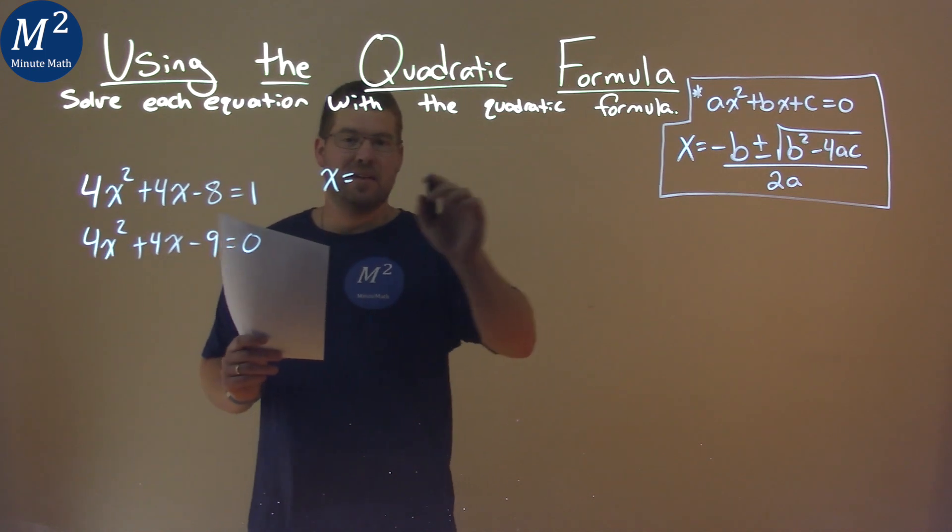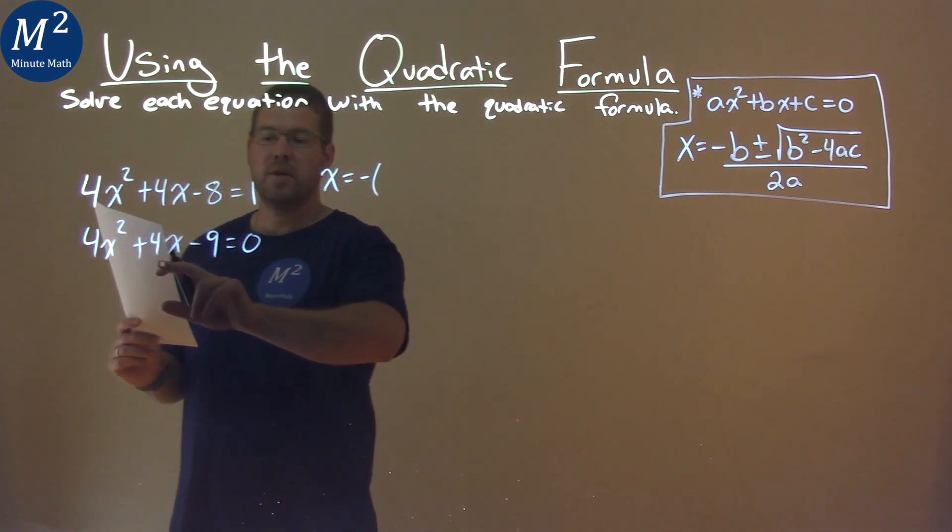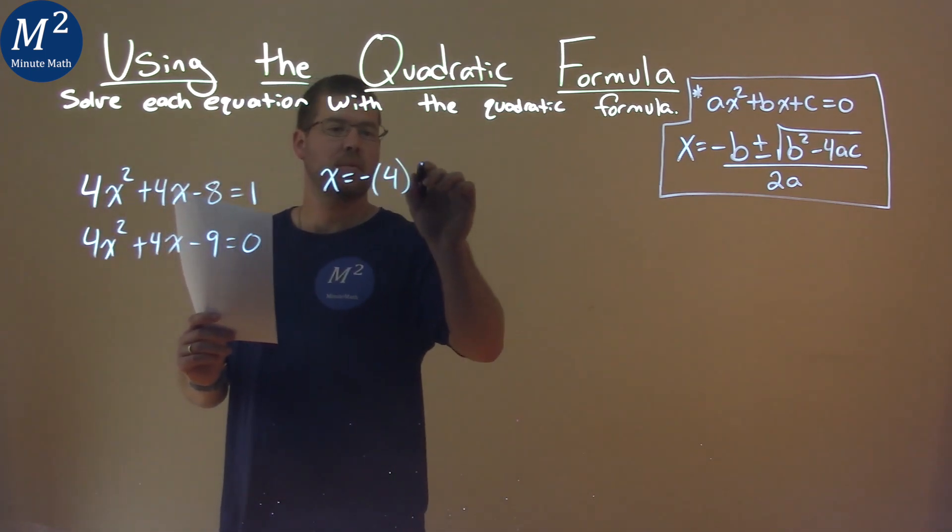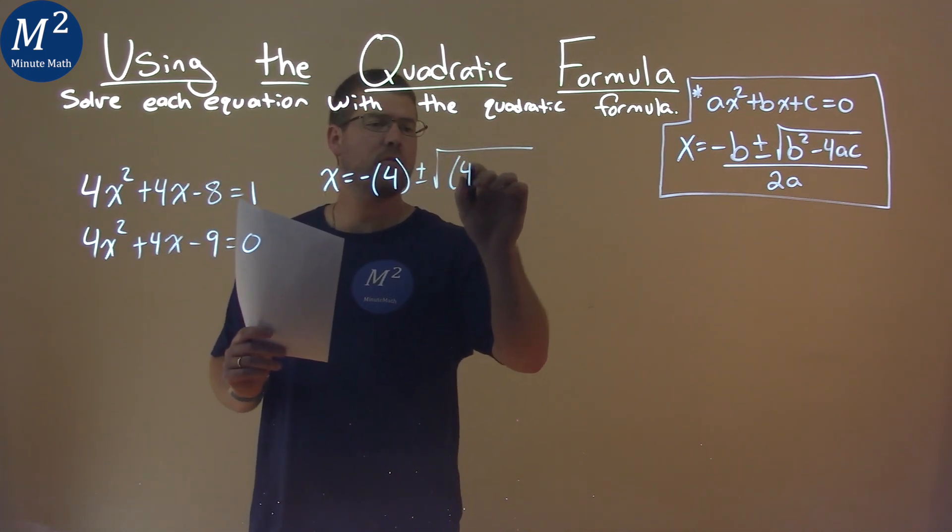x equals, let's just plug it in, negative, and then our b value, which is 4, plus or minus the square root of b squared, so 4 squared,